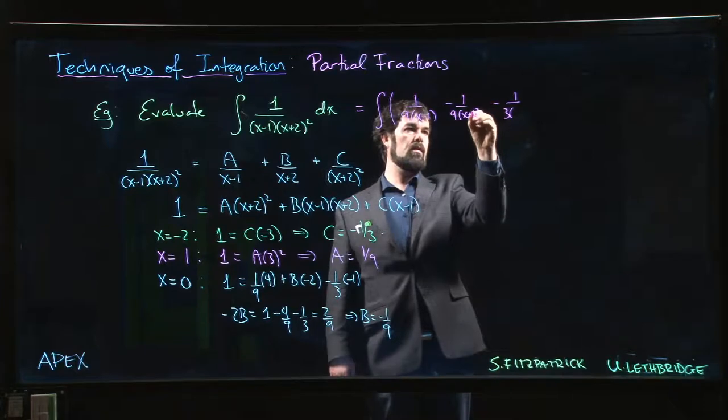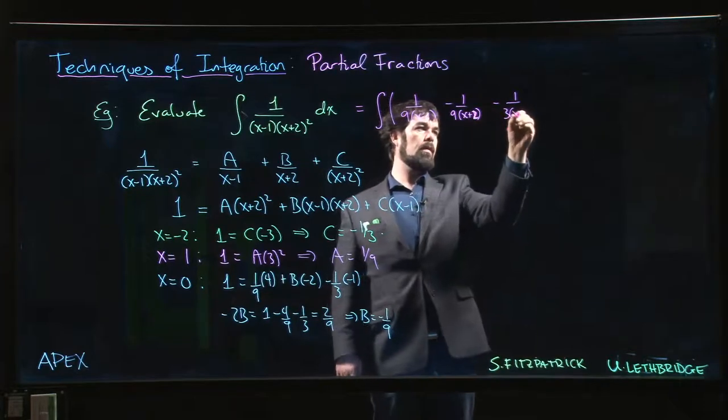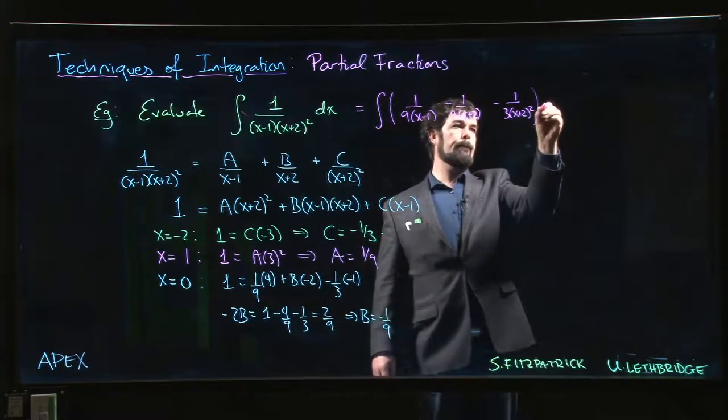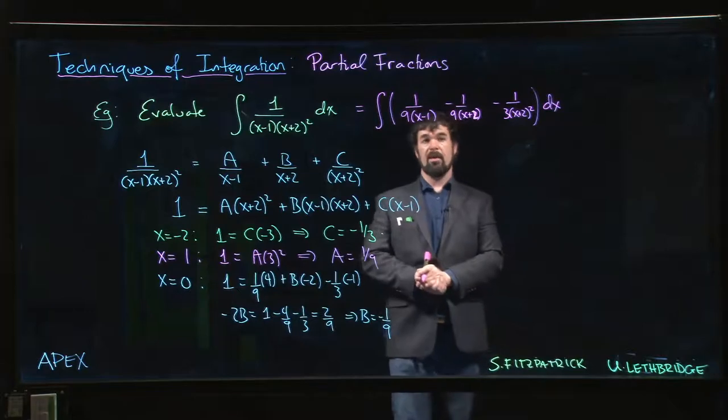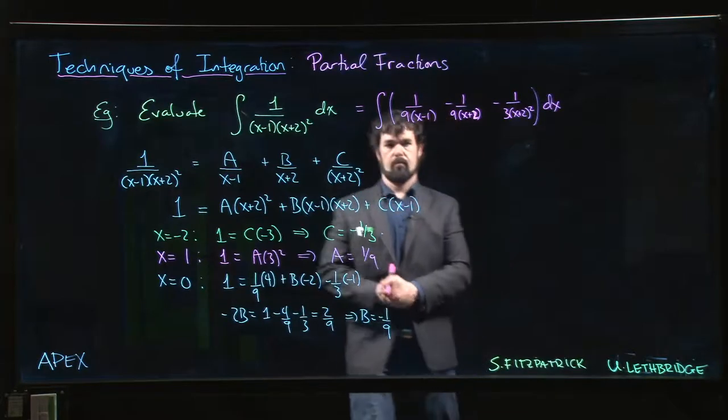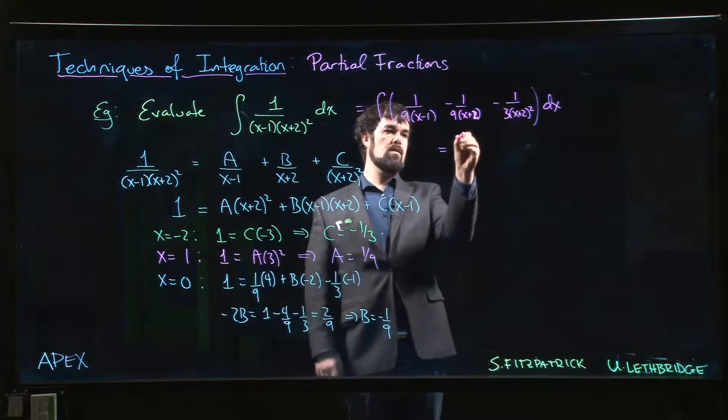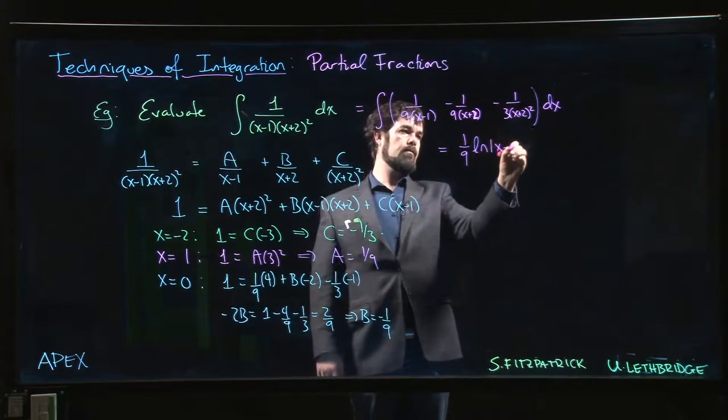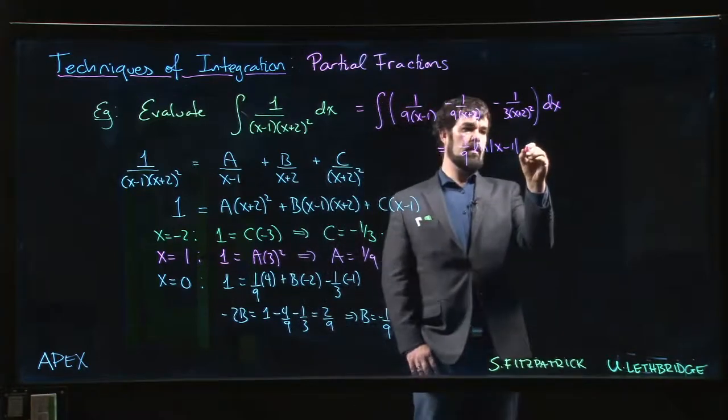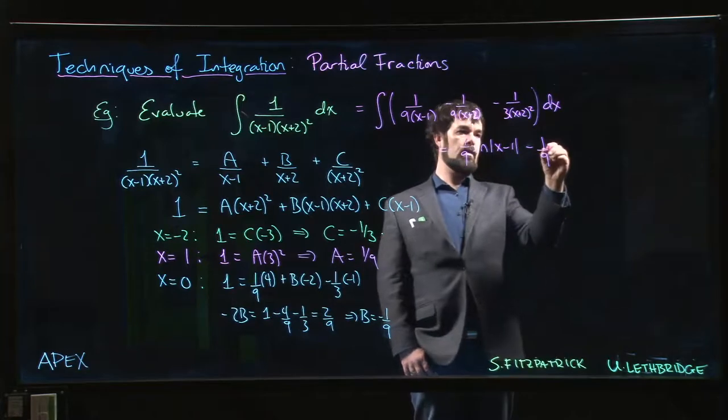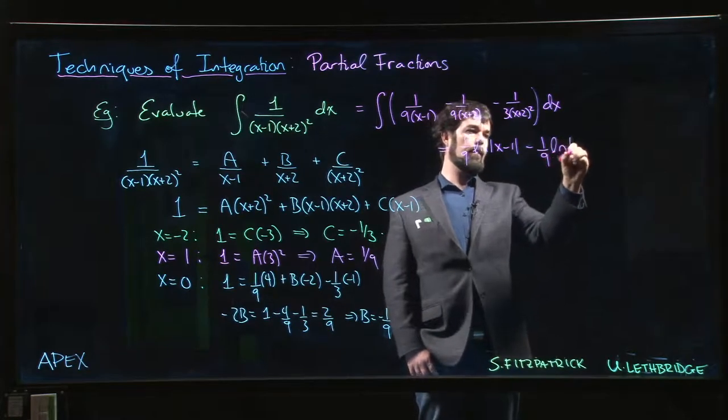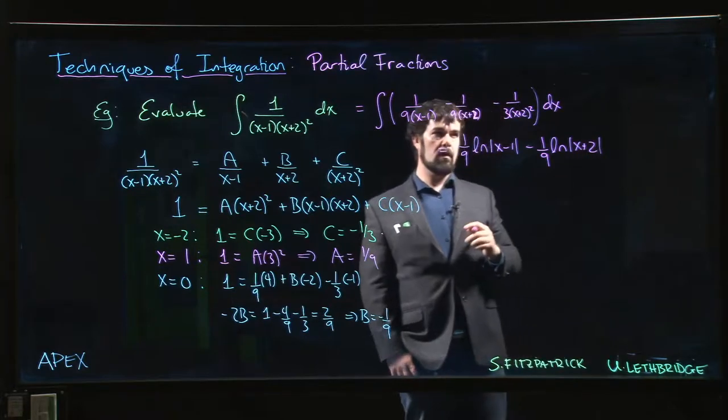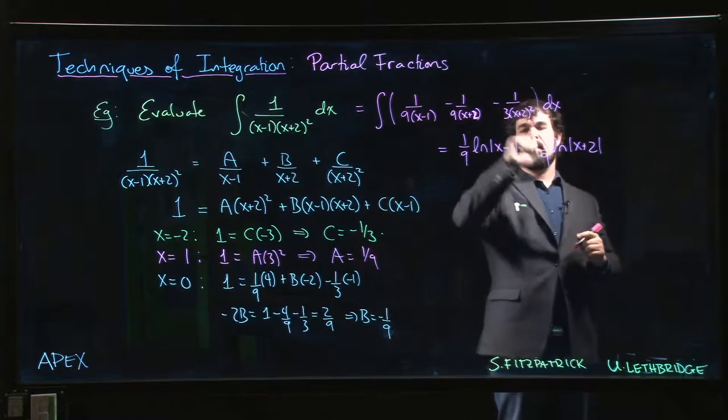And now we simply integrate term by term. So this is going to be 1 over 9 times the natural log of (x minus 1) minus 1 over 9 times the natural log of (x plus 2).